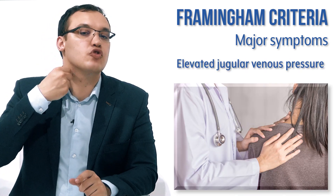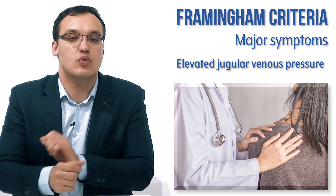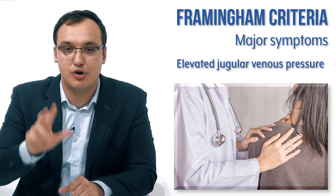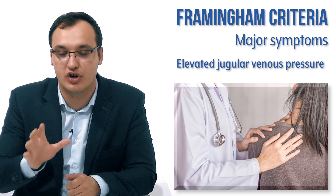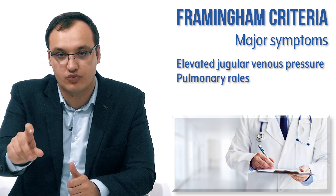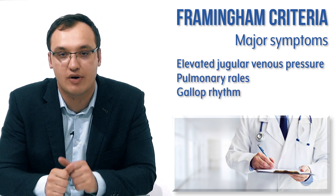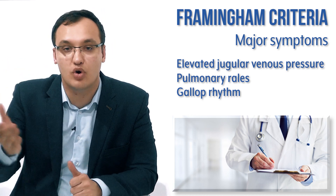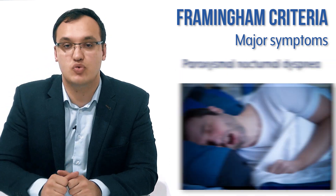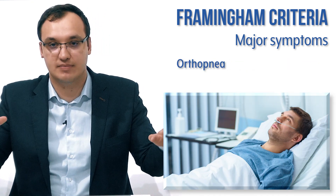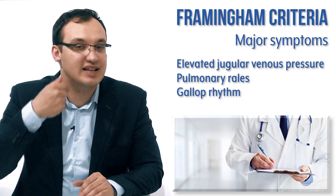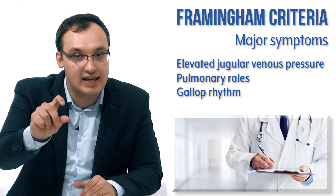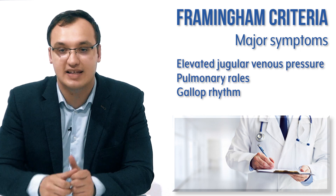When we check the jugular veins, we see elevated jugular venous pressure. So the three major findings from physical examination are: elevated jugular venous pressure, pulmonary rales on lung auscultation, and third heart sounds on cardiac auscultation. From the anamnesis, the two major findings are paroxysmal nocturnal dyspnea and orthopnea — difficulty breathing when lying down.